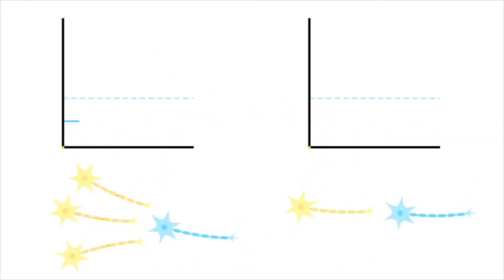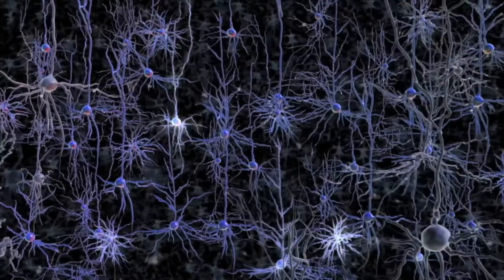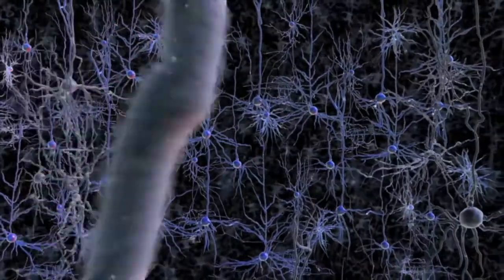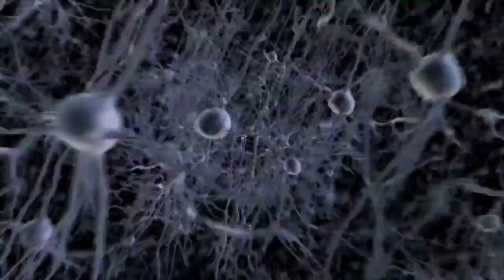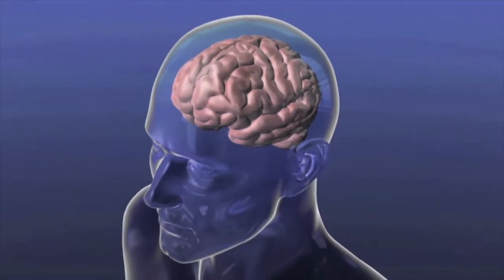When many neurons are stimulated at once, or a neuron is stimulated many times in a short period, these electrical signals can be passed on to other neurons throughout the brain. Each neuron is connected to thousands of other neurons, and their communication allows us to accurately make sense of the world around us.